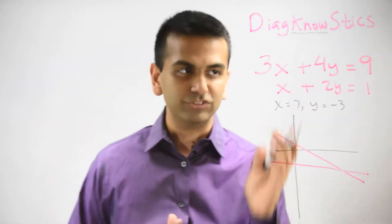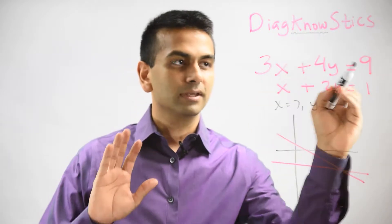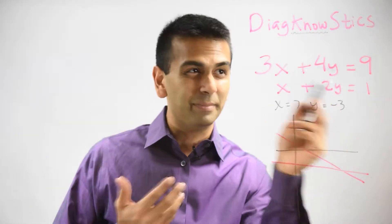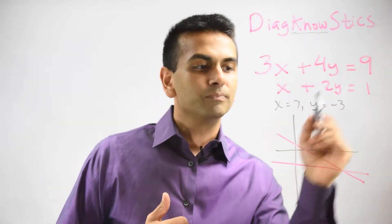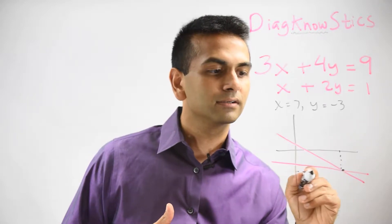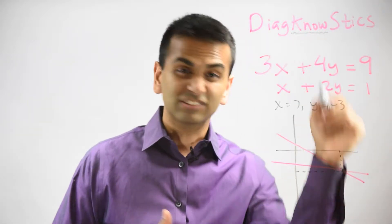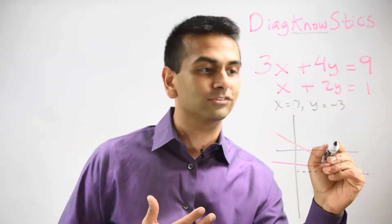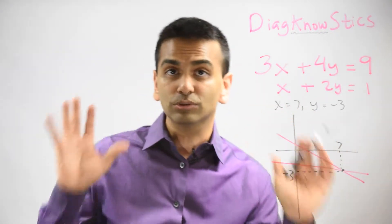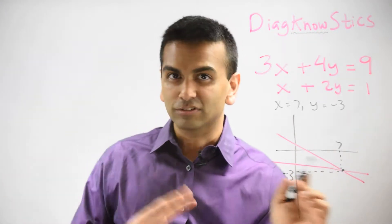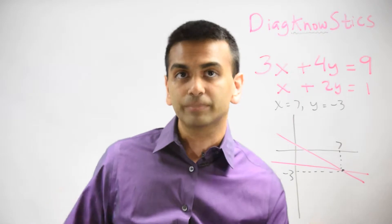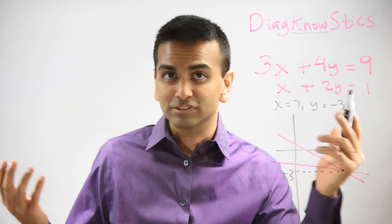The graphical interpretation is that each equation represents a line. These two red lines represent the two equations, and their intersection point is the solution to the system. So 7 comma negative 3 is that intersection point. Sometimes a question just gives you two lines and asks you to find the intersection point — step 1: panic; step 2: just use substitution.